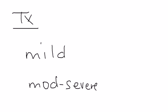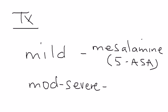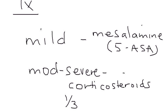For treatment there are two main medications. For mild disease there's mesalamine, also known as 5-ASA - that's the chemical name. For moderate to severe disease it's almost always corticosteroids, most commonly prednisone.